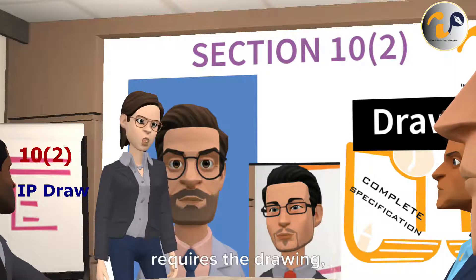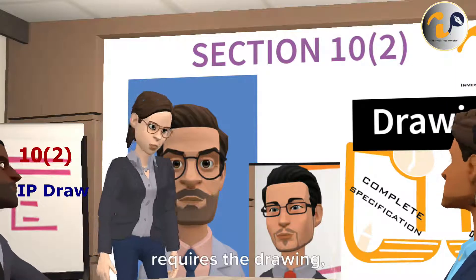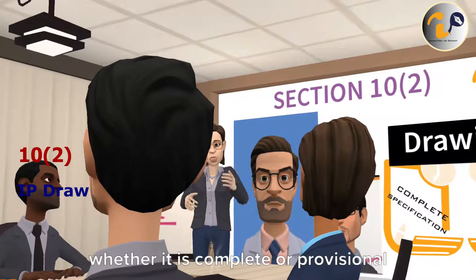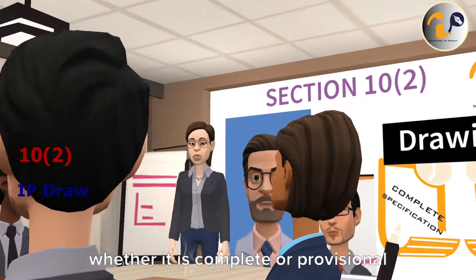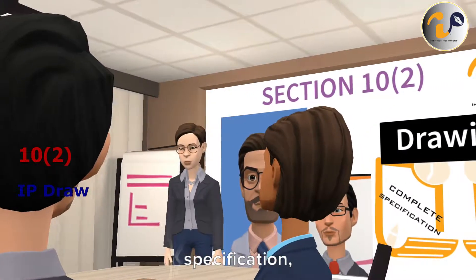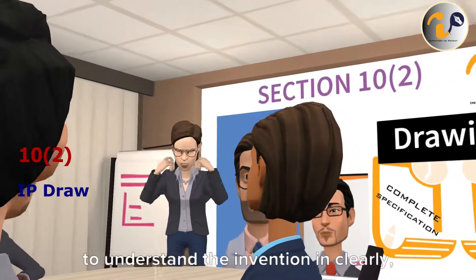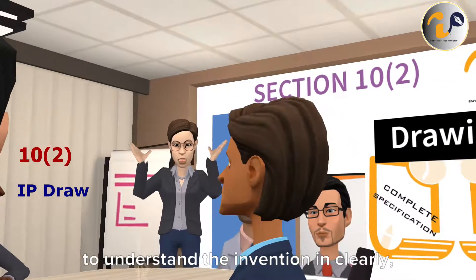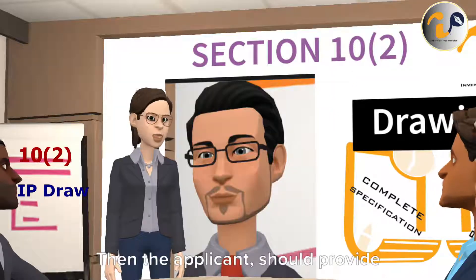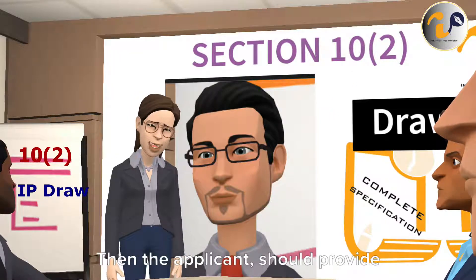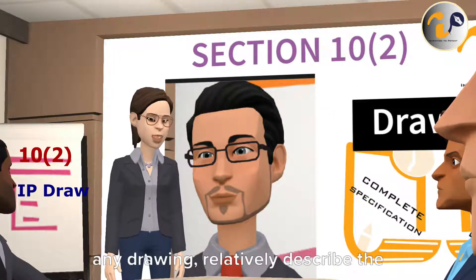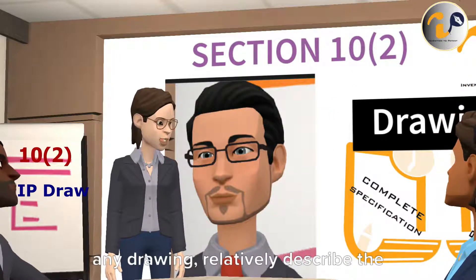As per Section 10(2), if the controller requires a drawing, whether it is a complete or provisional specification, to understand the invention clearly, then the applicant should provide any drawing that relatively describes the invention.